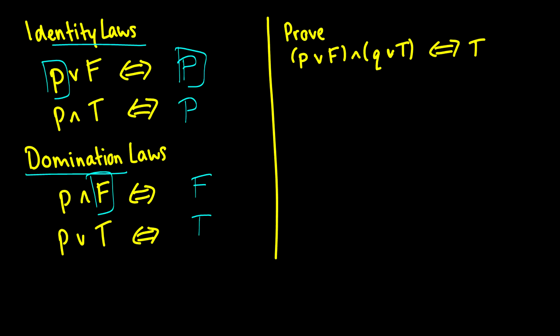Alright. So, let's prove that P or false, and Q or true, is equivalent to being true. We do bracket by bracket. We know P or false is equal to P. So we say this is P and Q or true, and we write identity. We want to clarify our steps every single time we do something.